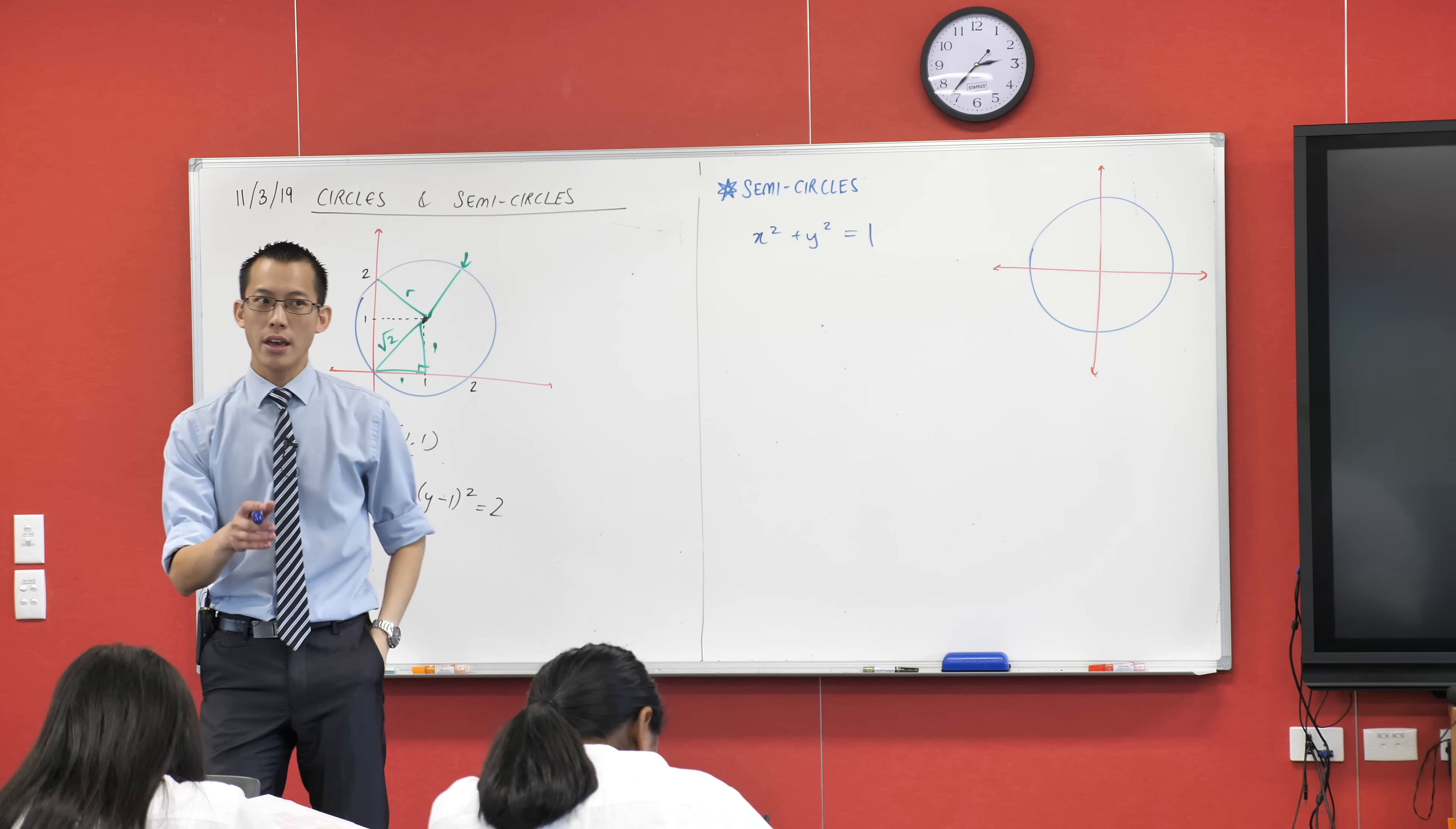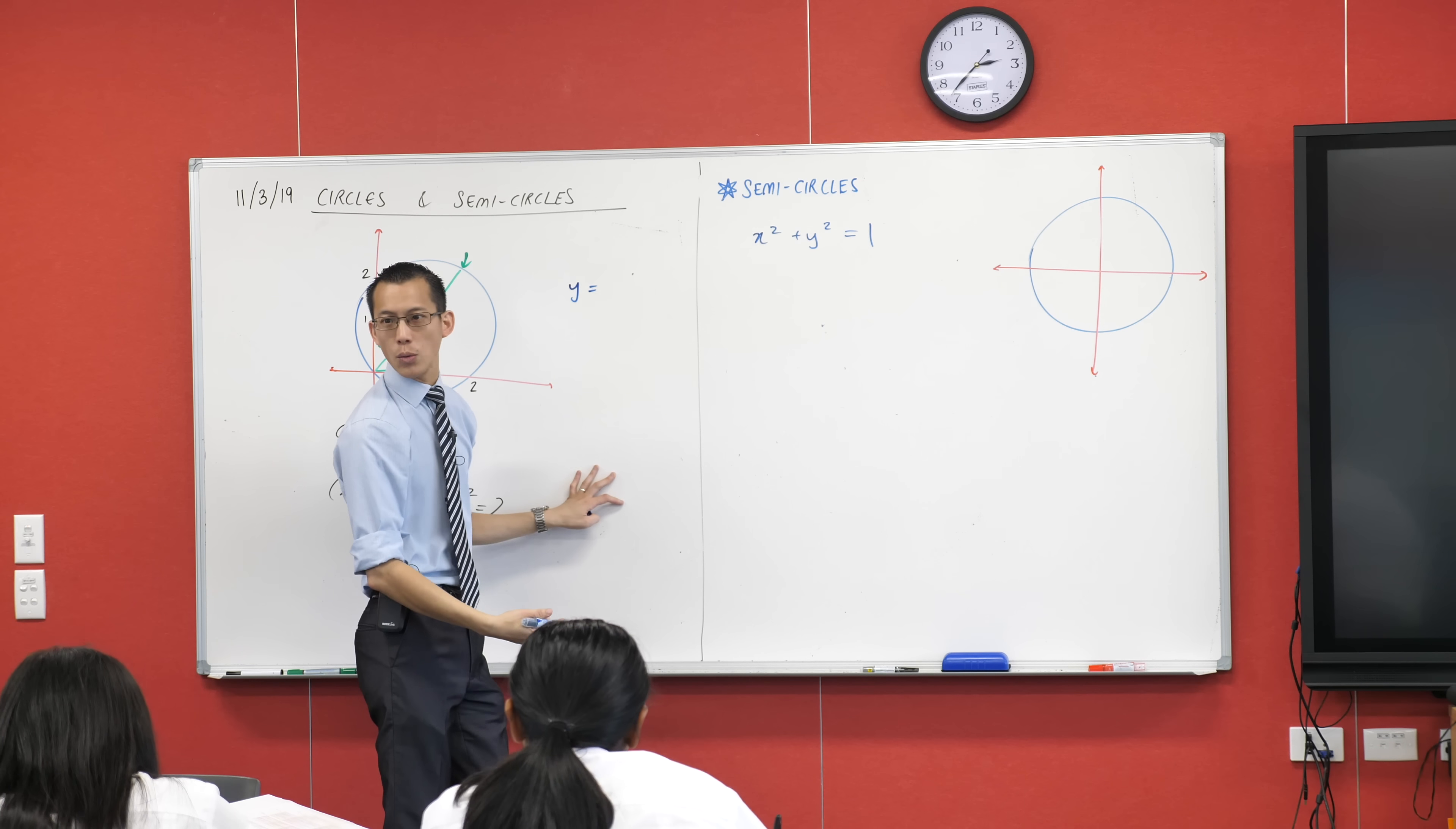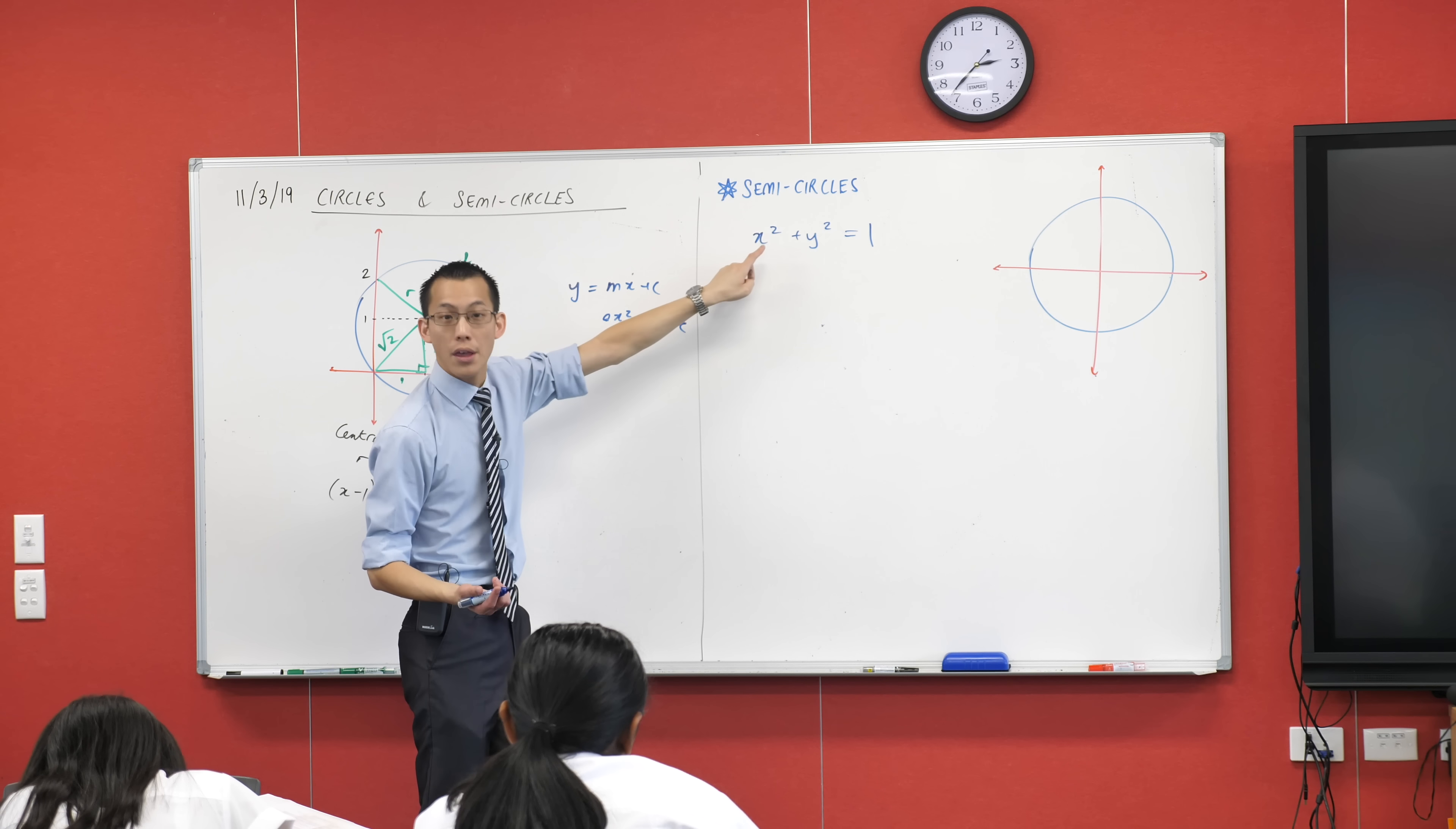x squared plus y squared, center's at the origin, radius equals 1. What I'm going to do here with you is, if we rearrange this equation such that we have x or y as the subject, it will make it really easy to see what the semicircle is. For instance, all the parabolas and hyperbolas and straight lines, we're used to seeing them in y equals whatever form.